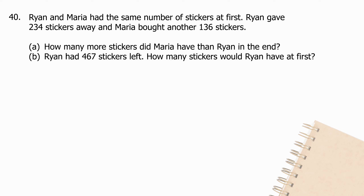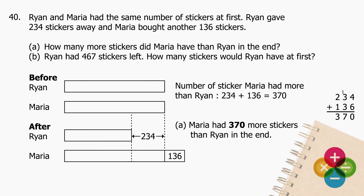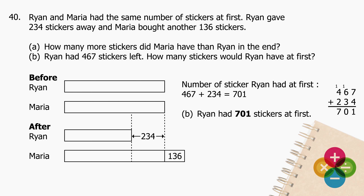Question 40: Ryan and Maria had the same number of stickers at first. Ryan gave away 234 stickers and Maria bought another 136 stickers. A. How many more stickers did Maria have than Ryan in the end? Add 234 to 136 and the sum is 370. Maria had 370 more stickers than Ryan in the end. B. Ryan had 467 stickers left — how many stickers did Ryan have at first? Add 467 to 234 and the sum is 701. Ryan had 701 stickers at first.